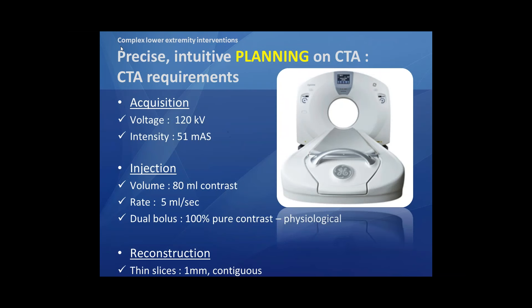In order to do this, we need a perfect planning of our procedure. This is a big difference from earlier days where we just looked at the pre-op pictures and then started the procedure. Nowadays we are preparing these challenging cases in more detail before the procedure. You need a perfect CT angiography — and I'm not a radiologist — so you need a good relationship and good collaboration with your department of radiology to have these perfect CTA images in advance.